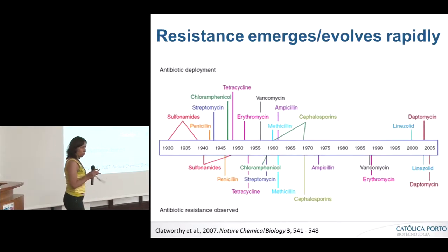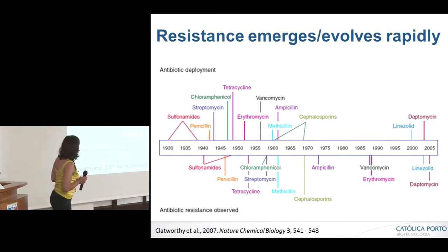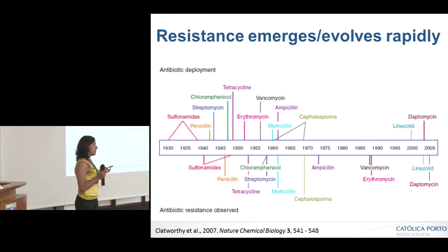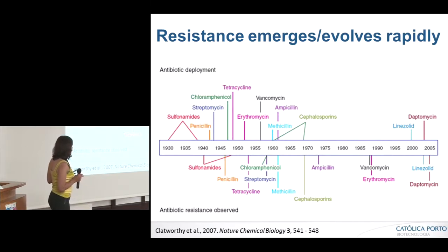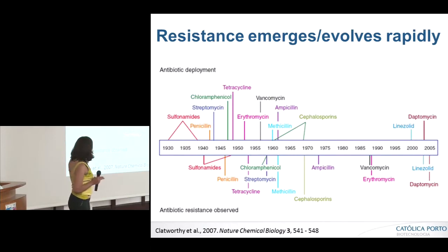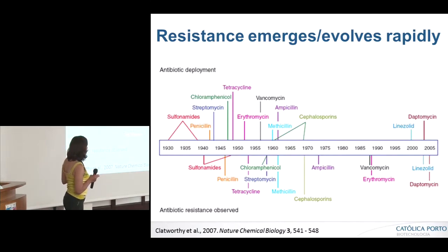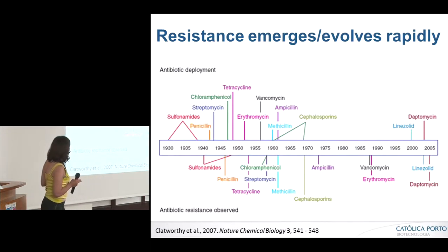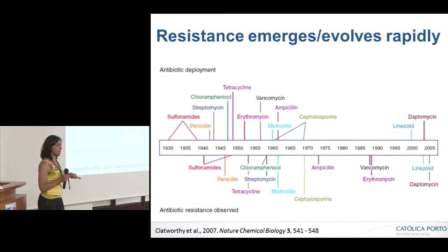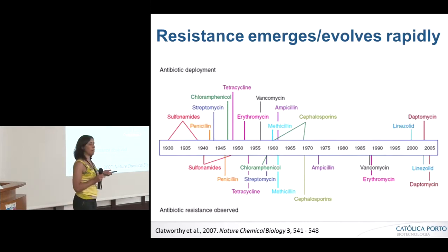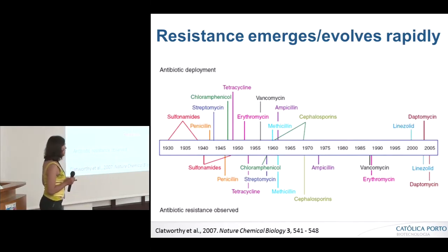Before talking about water and antibiotic resistance, I would like to say a few words about the nature of antibiotic resistance. It emerges and it evolves very, very rapidly. Here we can see the dates when some antibiotics were available on the market and below we can see the short period of time needed for resistance to become a problem in clinical settings. Antibiotic resistance can evolve very, very rapidly, and this is really frightening.